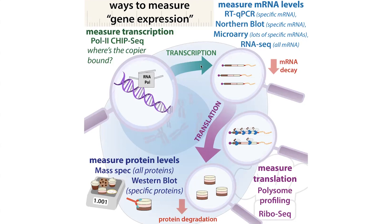Transcriptomics deals with transcription, which is where you make a messenger RNA copy of that gene. So this is telling you about one step in expressing the gene — actually making these messenger RNAs. If you do RNA sequencing, you can measure how many messenger RNA copies there are for a specific gene. When you do this for all of them, you're getting into omics territory. You can also do things at different scales — like a single tissue, a single cell, various ways.